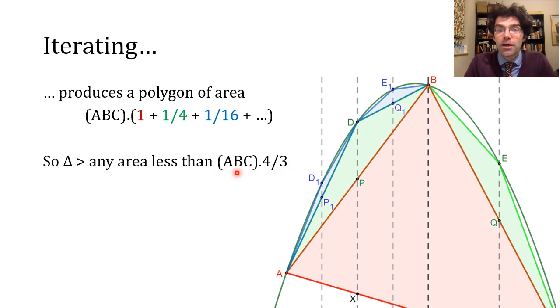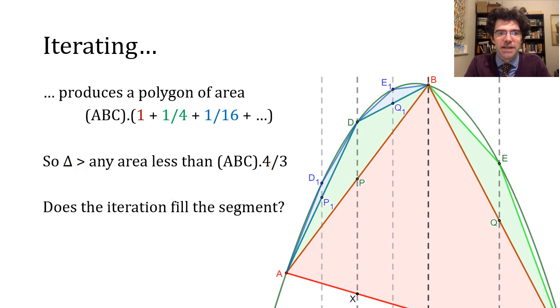It looks like we're homing in on the result, but we need also to check that this iterative process would really get as close as you like to filling up the entirety of the parabolic segment. We have to check that there's no little weird corner which never gets covered by the polygon, in which case the area of the parabolic segment would be a bit more. So does the iteration fill the segment?